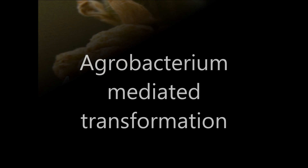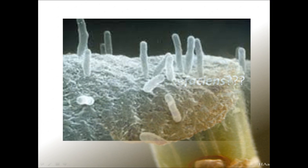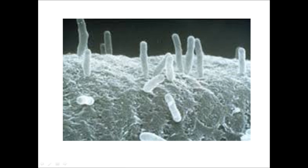Agrobacterium-mediated transformation. What is Agrobacterium tumefaciens? It is a rod-shaped gram-negative soil bacterium which belongs to the family Rhizobiaceae, to which most of the leguminous plants belong. It is pathogenic and does not benefit the plant in any way. It causes crown gall disease in plants. This is an electron microscopic picture of Agrobacterium tumefaciens.